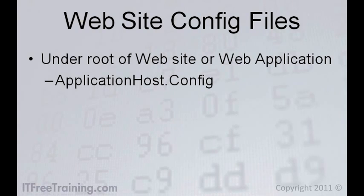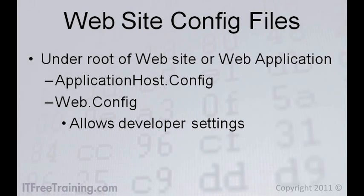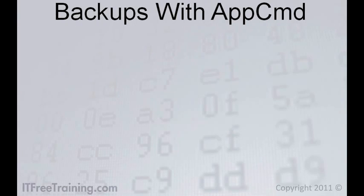The root directory may also contain another config file called web.config. The web.config file has the advantage that developers can add configuration information to it. Keep in mind that when copying configuration files from one server to another, you need to make sure that the same components are installed on each server. If components are missing on the target server, the website or web application may not work as expected, even though the configuration files were copied over. IIS also has its own backup system, which can save configuration files on the local server and restore them later, done using the appcmd command.